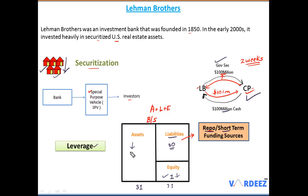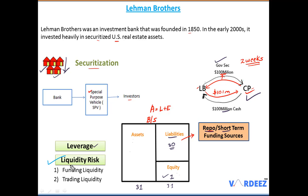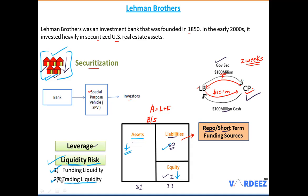The majority of Lehman's assets were mortgage loans, which were falling in value. When times are tough and there is a crisis, companies look for the most important thing: liquidity. Trading liquidity risk occurs when you try to liquidate assets but the underlying value has fallen, forcing you to sell at fire-sale prices. The other type Lehman faced was funding liquidity risk — they had liabilities to pay but counterparties stopped giving them money, since they relied on short-term funding sources.